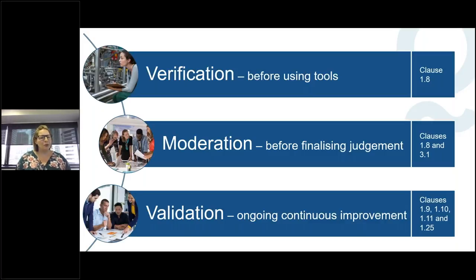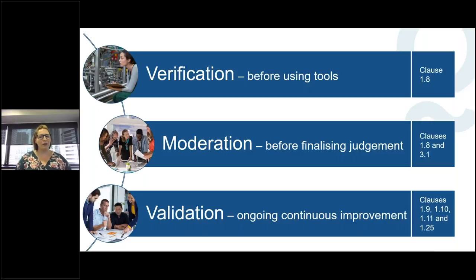The reason moderation can be so good is that you're checking your intended outcomes before making that final decision. If there's something that's not quite right, you can reassess, conduct another assessment, or challenge tests before actually finalising and determining competency. This way you're assuring your RTO that you're only issuing a competent decision to a learner you can confidently say has met the requirements of the training product under clause 3.1.